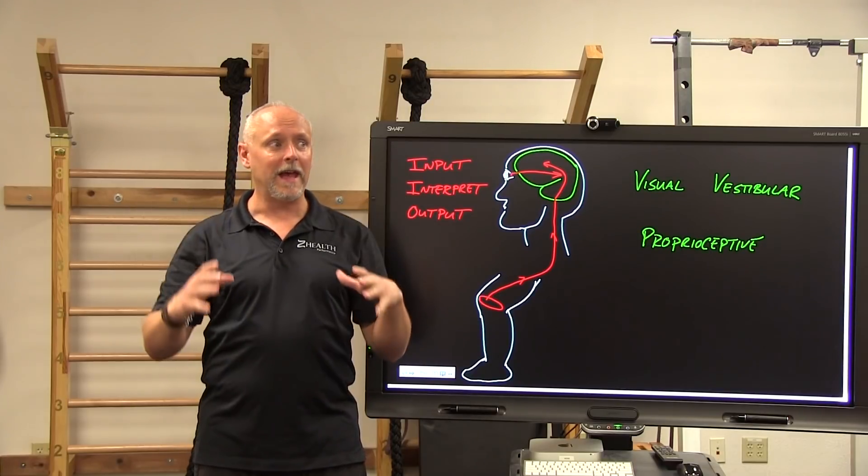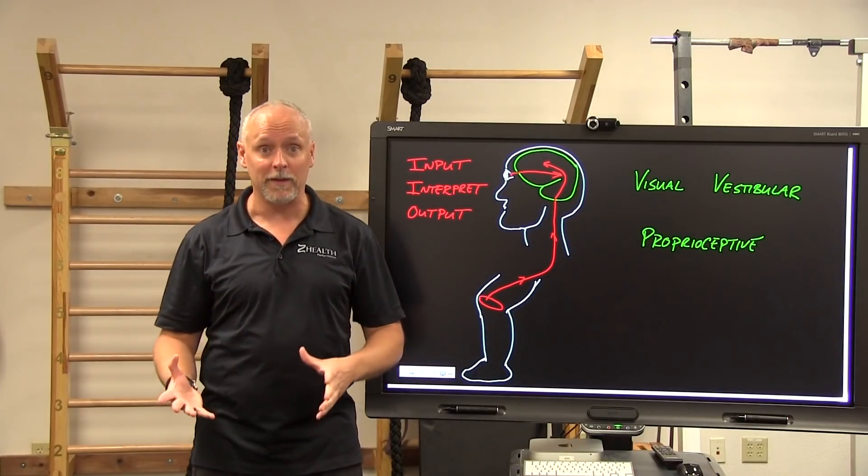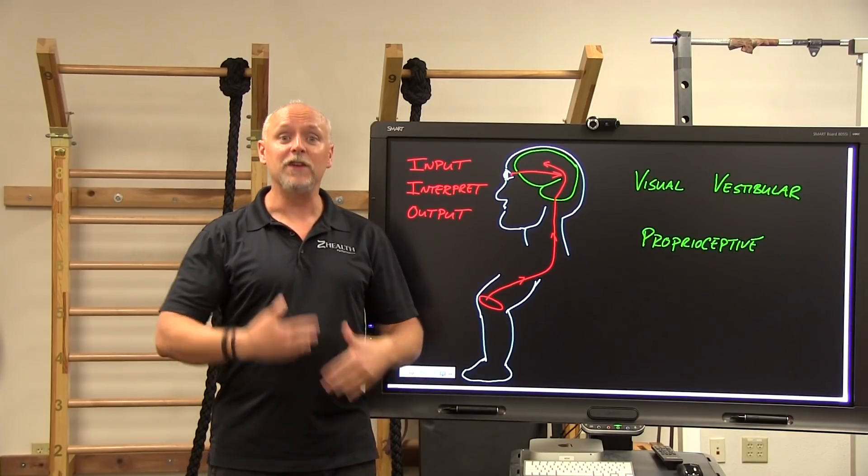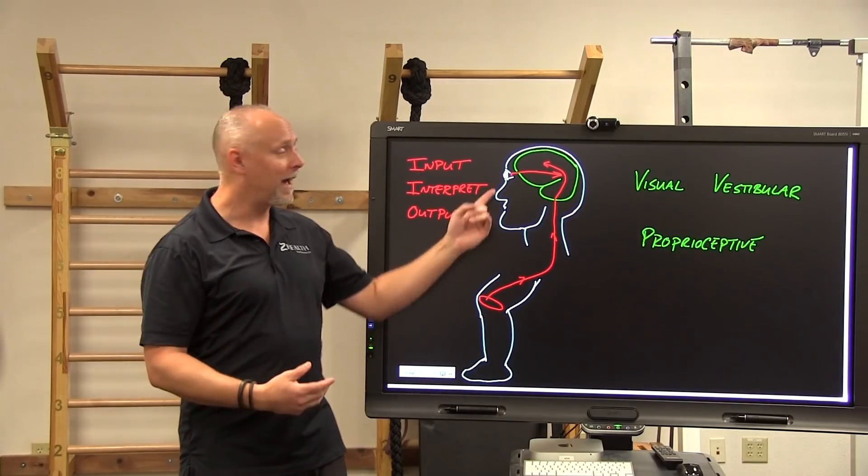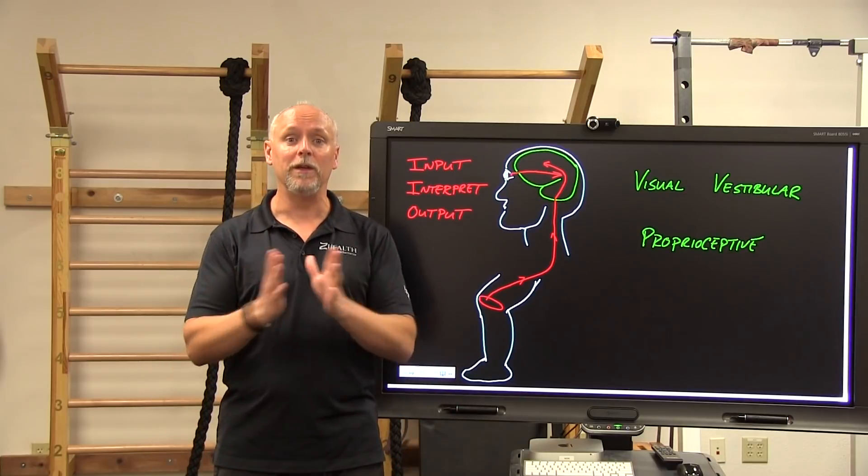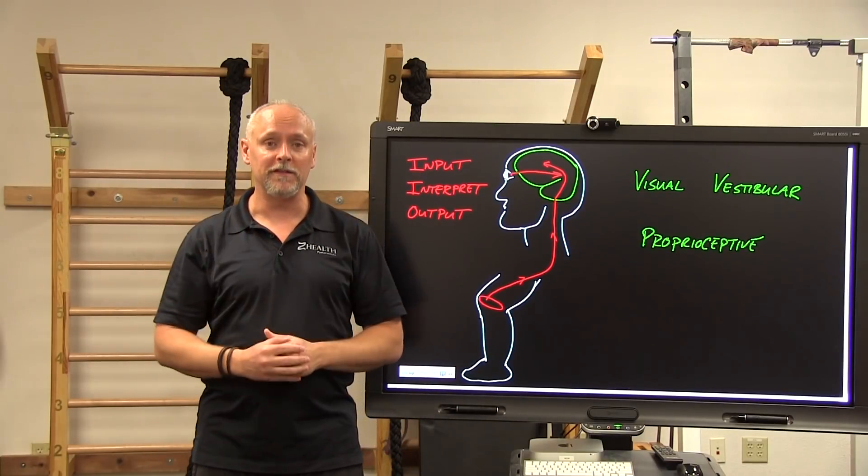Many people, whenever they go into this, they actually find that their balance is really compromised. That's very normal. As you train, what will happen is your brain mapping for the rest of your body will improve as you reduce the dependence on the visual system.